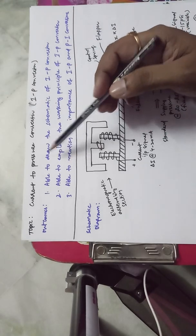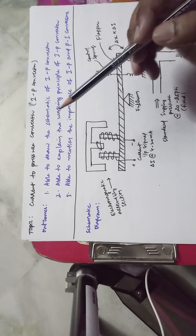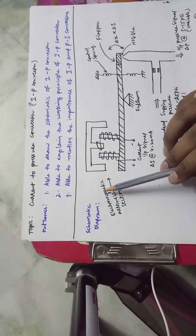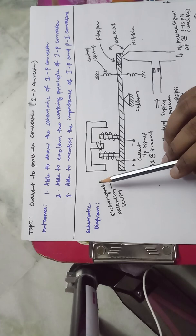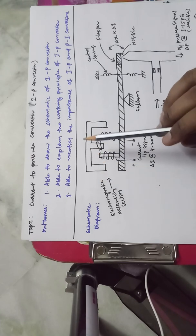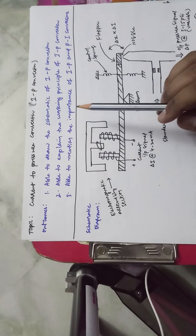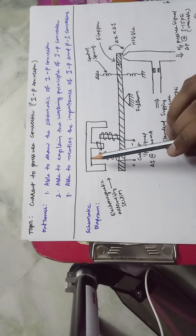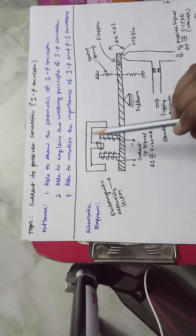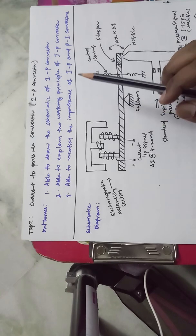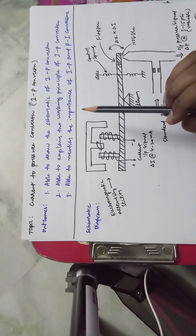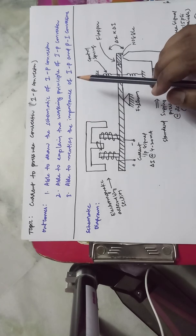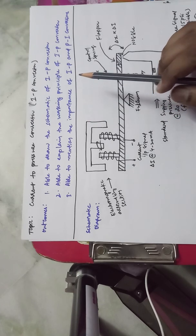The third learning outcome is that the student will be able to mention the importance of I2P and P2I conversions in industrial practice. With basic knowledge of conversion ranges: the I2P converter converts 4 to 20 milliamperes to 3 to 15 PSI pressure.